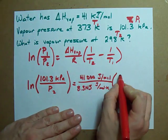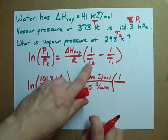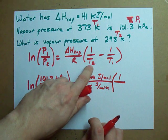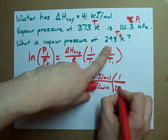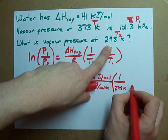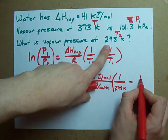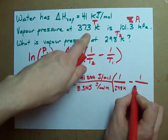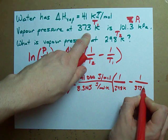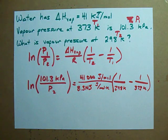Then, 1 over the second temperature, the temperature you're looking for the pressure at. That's 298 Kelvin minus 1 over first temperature, 373 Kelvin.